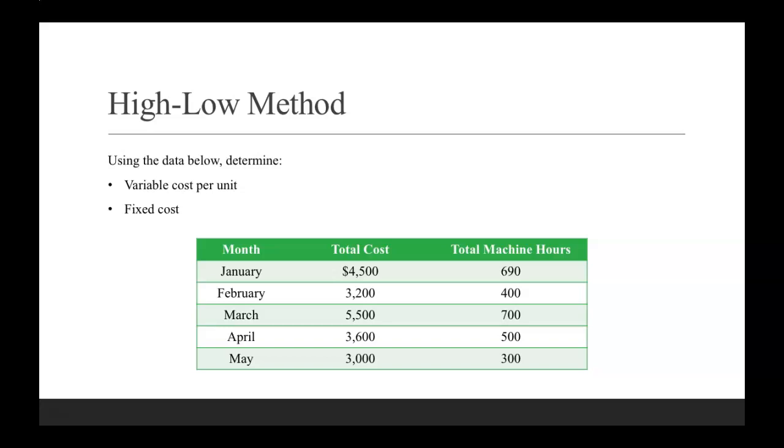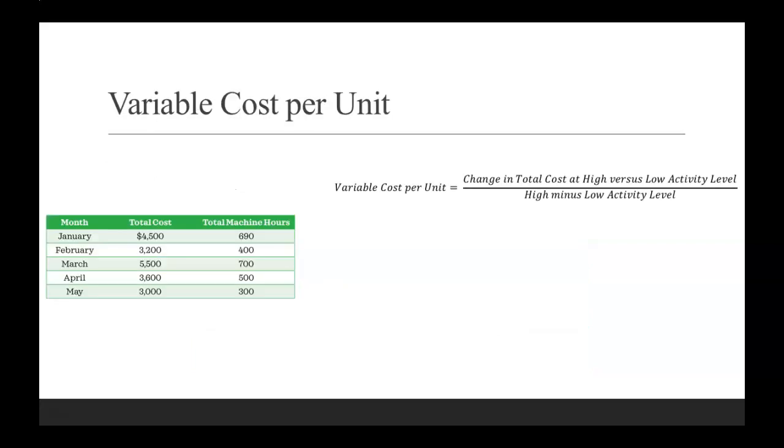We have total cost information and total machine hour information. We're going to use that to determine our variable cost per unit and then our fixed costs amount.